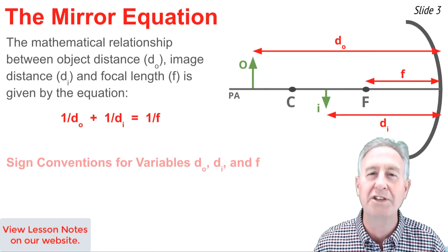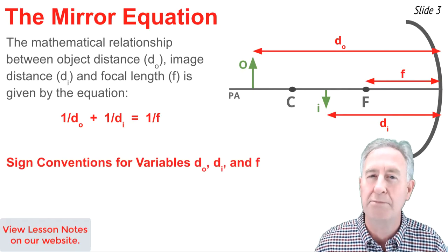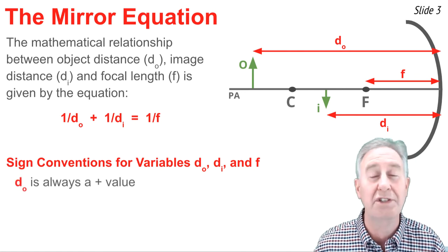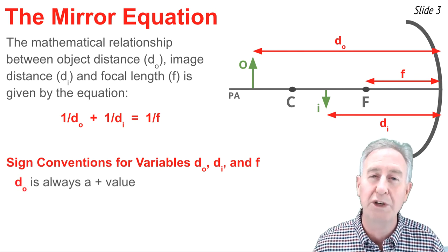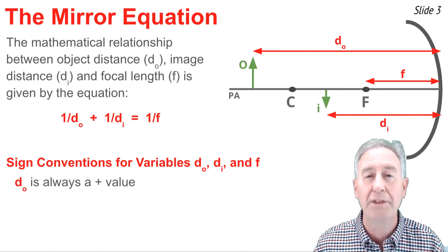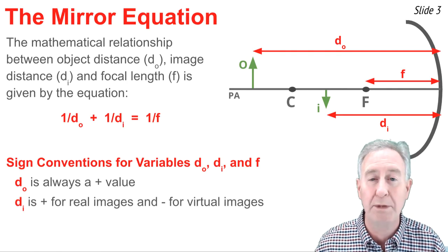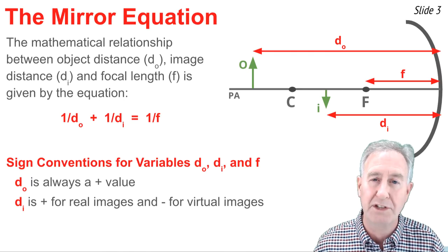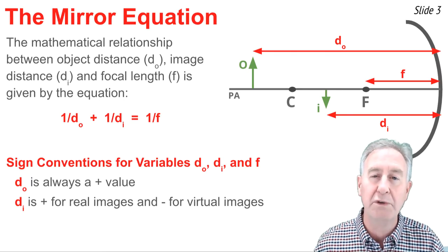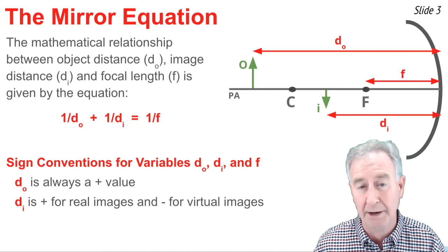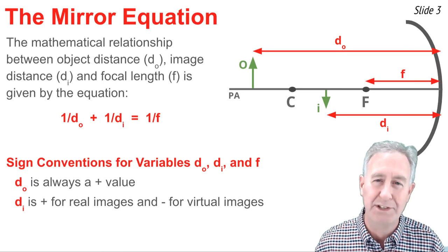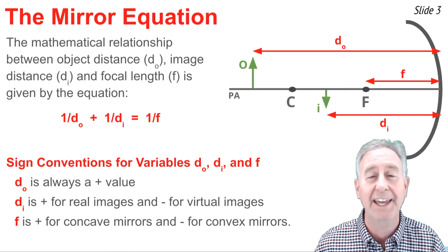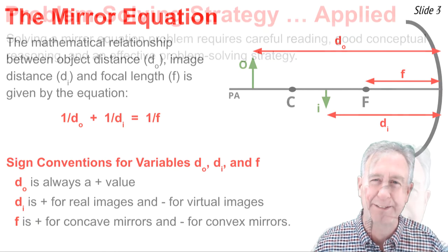The most difficult part about using this equation has to do with the plus minus nature of these three variables. For the object distance, it's straightforward. It's always going to be a positive value. But the image distance, d_i, can be either positive or negative. For real images, image distance is positive, and for virtual images that would be behind the mirror, they have negative image distances. For focal length, it's always going to be positive for a concave mirror and negative for a convex mirror.